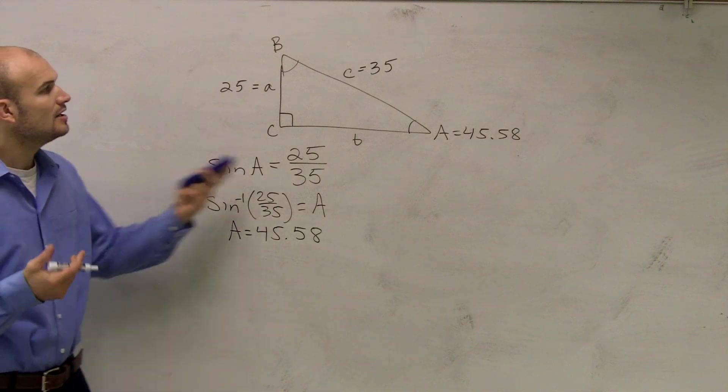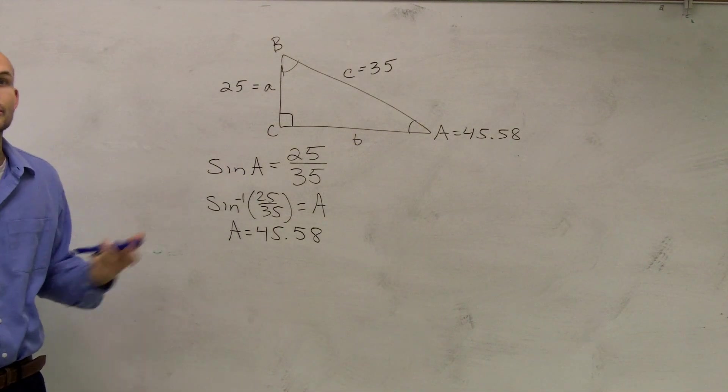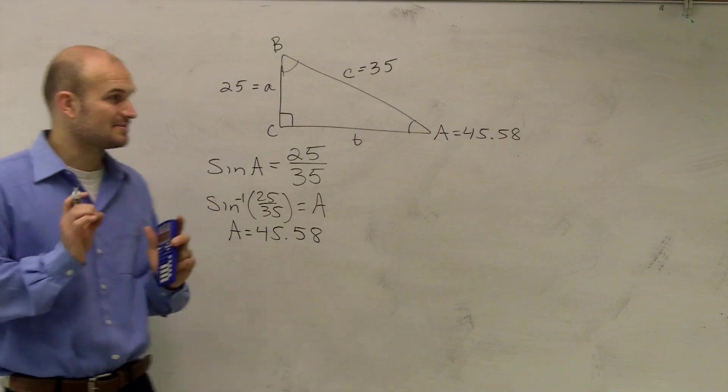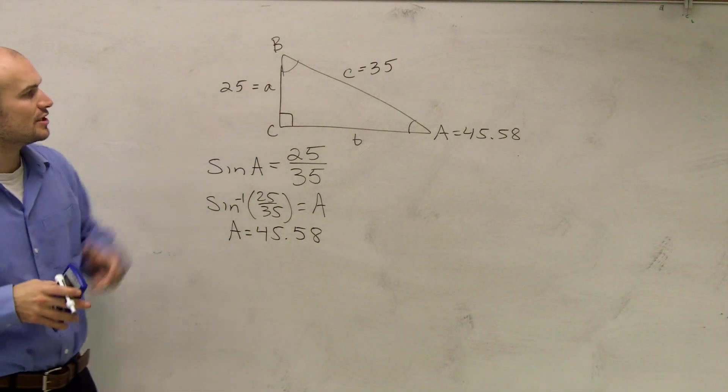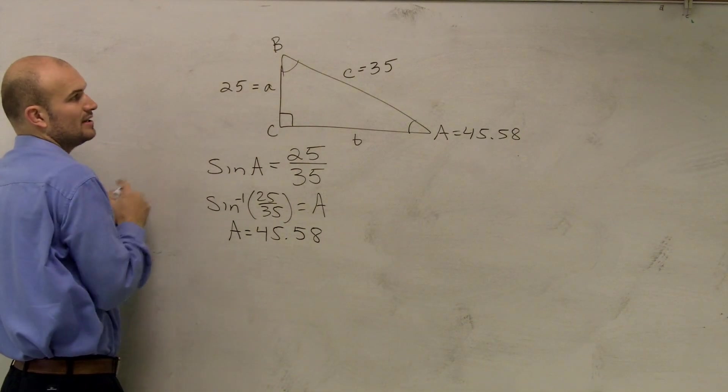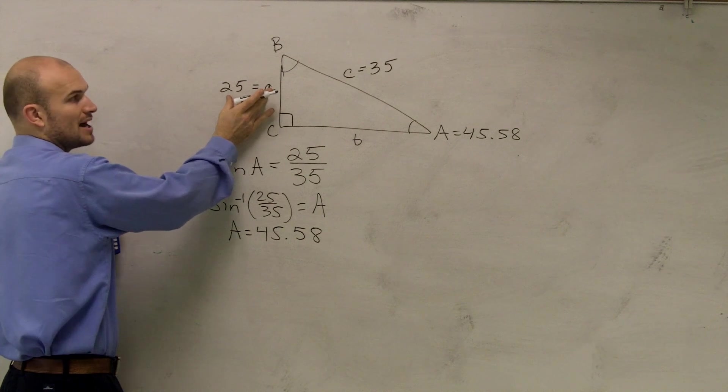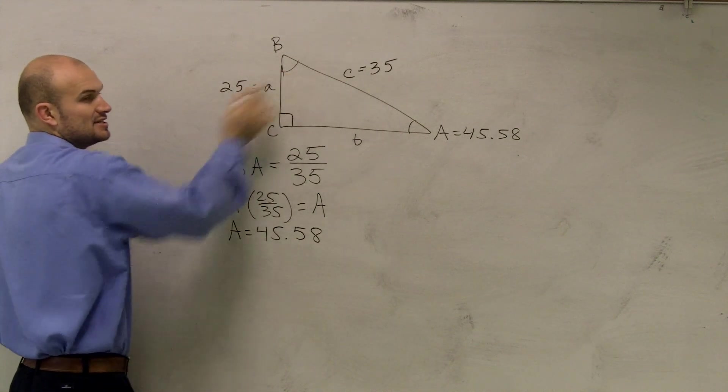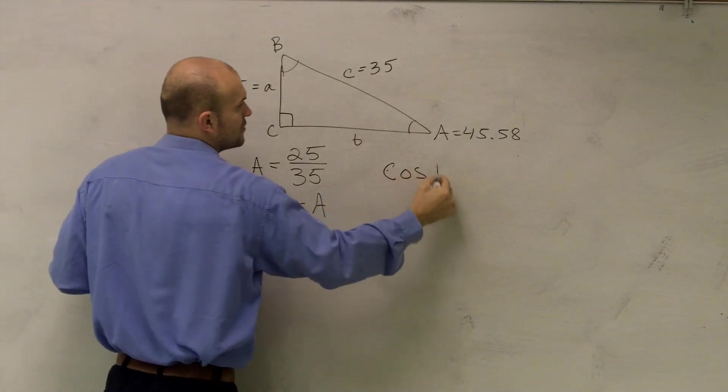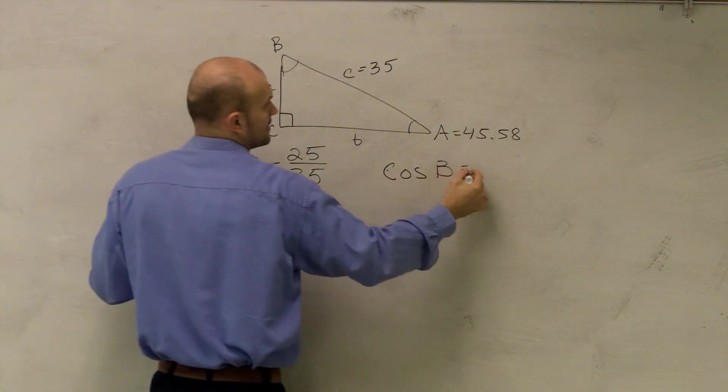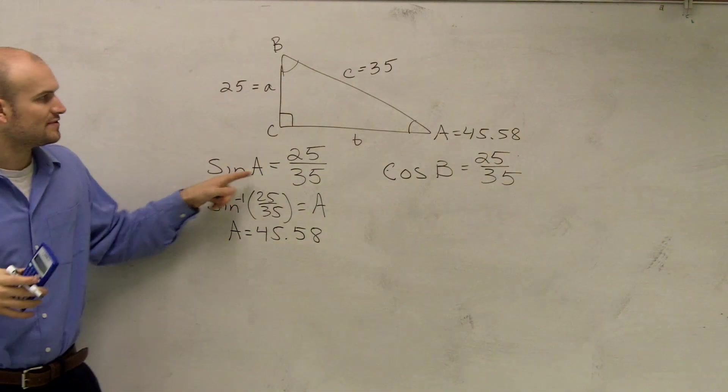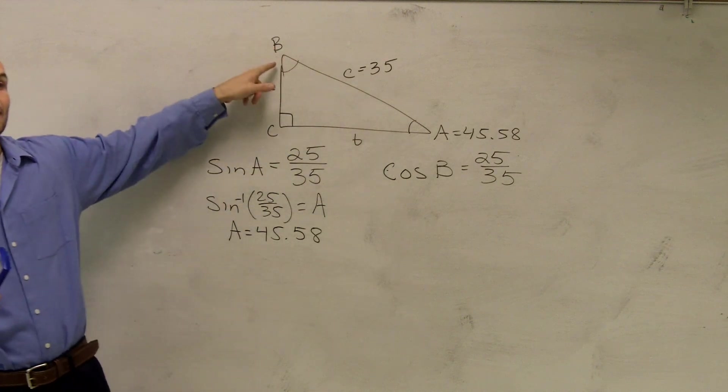Yeah, pretty much. We could also use a trig function, though. And I'm just going to use another trig function just to make sure. Now like I said, I am rounding the angles, so we're not going to get some exact numbers. Well, let's just use another inverse trig function to determine it. If I was going to use angle B, if I want to figure out angle B, I have A which is now my adjacent, and C is my hypotenuse. So I would have to use the cosine for B. So cosine of angle B equals 25 over 35.